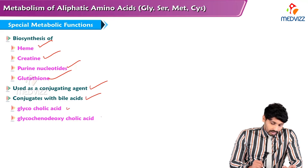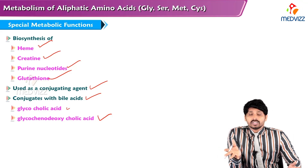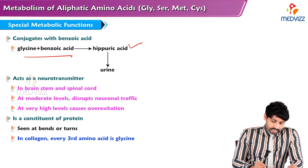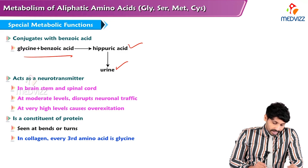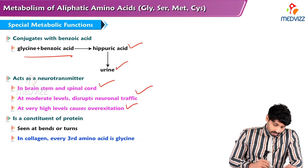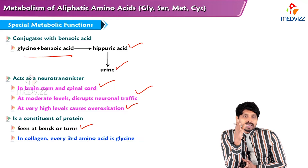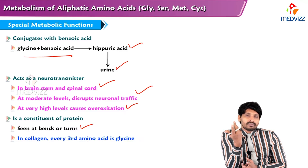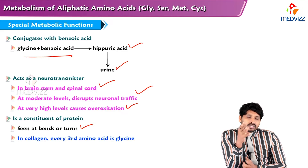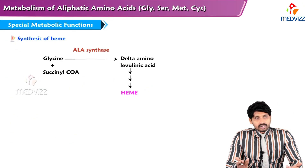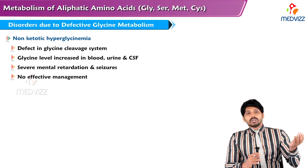Glycine is involved in heme synthesis, creatine, purine nucleotides, and glutathione. As a conjugating agent, glycine forms conjugated bile acids — glycocholic acid and glycochenodeoxycholic acid — which are required for bile salts and fat emulsification. Combined with benzoic acid, glycine forms hippuric acid, excreted in urine. As a neurotransmitter in the brainstem and spinal cord, glycine at moderate levels modulates neural traffic; at very high levels it causes overexcitation. Because of its simple structure, glycine is a helix breaker — it cannot fit into an alpha-helix, causing bends and turns. Every third amino acid in collagen is glycine. For heme synthesis, glycine and succinyl-CoA combine to form ALA, catalyzed by ALA synthase.